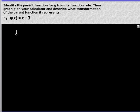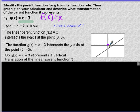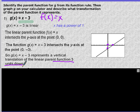Identify the parent function for g from its function rule, then graph g on your calculator and describe what transformation the parent function represents. g of x equals x minus 3. Which rule does that most closely look like? It looks like linear. If you graph it on your calculator, it's going to look like this. The y intercept is moved 3. So you can say one of two transformations: either left 3 or down 3. They represent it as 3 units down.